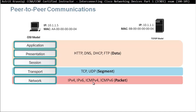HTTP is for browsing. DNS resolves names to IP addresses — we give a name and it gives us an IP address, because we remember names more easily than numbers. DHCP stands for Dynamic Host Configuration Protocol; it's a server that assigns and leases IP addresses to clients. FTP stands for File Transfer Protocol.